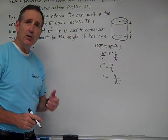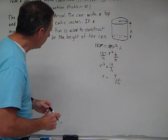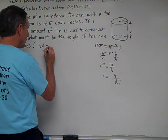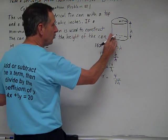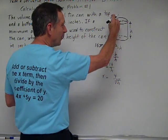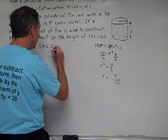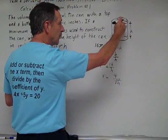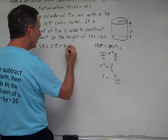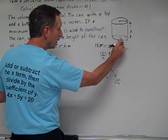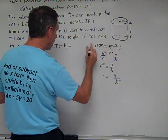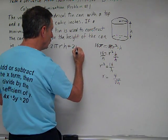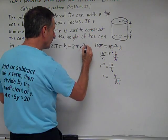Next, we use the surface area equation. The formula for surface area equals 2πrh for the lateral area — that's essentially the label of the can — plus the area of the top and bottom. The area of a circle is πr², so we add 2πr² for both circular ends.